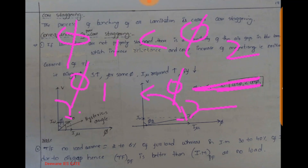One more point: the no-load current of a transformer is 2 to 6 percent of full load, whereas in an induction machine it is 30 to 40 percent because of the air gap. This is the reason why in all rotating machines — whether DC or AC — we are not using CR-GO steel; we are settling for silicon steel. Because even if you use CR-GO steel, you cannot reduce the air gap, so imu is still very high. Also, the cost of CR-GO is very high and it must be imported because that technology is not available in India.